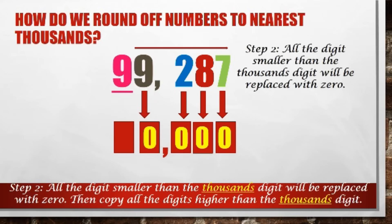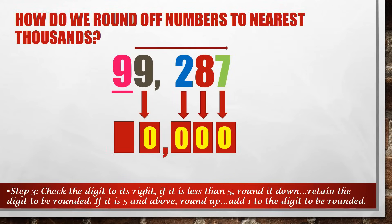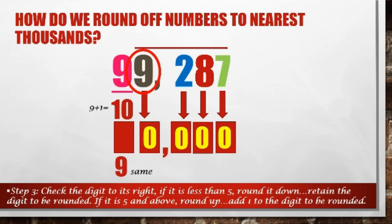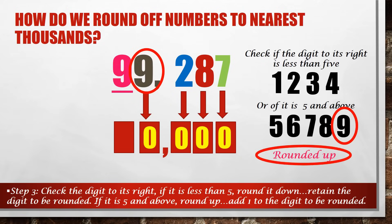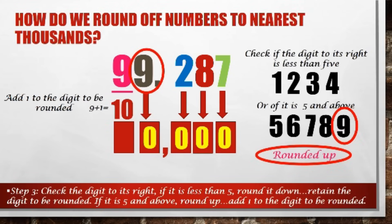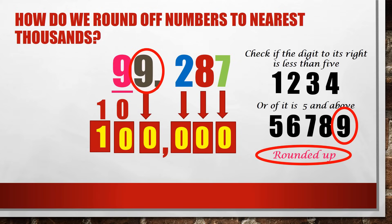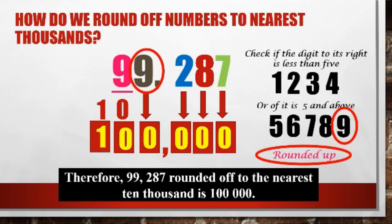Now, how about the digit we need to round off? To determine if we keep the same digit or increase it by 1, we check if the next digit to the right of the underlined digit is less than 5 (1, 2, 3, 4) or exactly 5 and above (5, 6, 7, 8, 9). Since the digit is 9 and it belongs to 5 and above, we increase the digit by 1: 9 plus 1 equals 10. Since the answer is a two-digit number, 0 will be in the ten-thousands place and 1 will be in the hundred-thousands place. Therefore, 99,287 rounded off to the nearest ten thousands is 100,000.